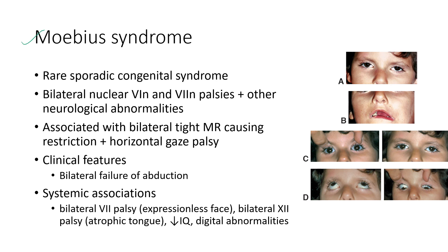Next is Möbius syndrome. It is a rare sporadic congenital syndrome characterized by bilateral nuclear 6th and 7th nerve palsies and other neurological abnormalities. It is associated with bilateral tight medial rectus causing restriction and horizontal gaze palsy. Clinical features include bilateral failure of abduction, expressionless face from 7th nerve palsy, atrophic tongue from 12th nerve palsy, reduced IQ, and digital abnormalities, all shown in the clinical pictures.